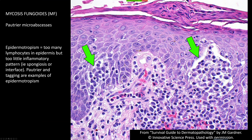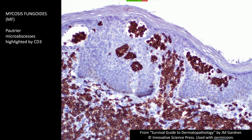Looking closer at the Pautrier micro-abscesses, they look an awful lot like Langerhans cells, which like to aggregate and make pools or nests in the epidermis — especially in spongiotic dermatitis like contact dermatitis. The distinction: if I'm not sure whether those are Langerhans cells or T-cells, immunostains will easily solve that. If they're Langerhans cells, it's probably just reactive. If they're T-cells, this is almost certainly mycosis fungoides or another epidermotropic lymphoma. There are other epidermotropic lymphomas, but that's complex and beyond the scope of this talk.